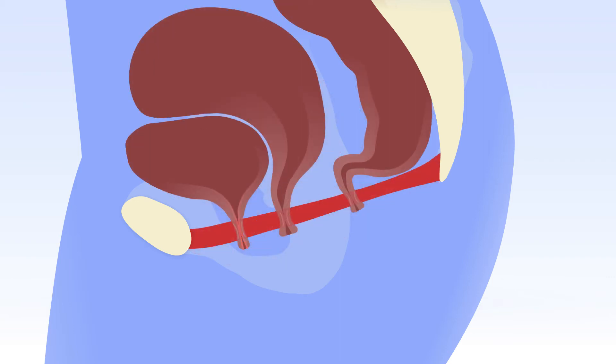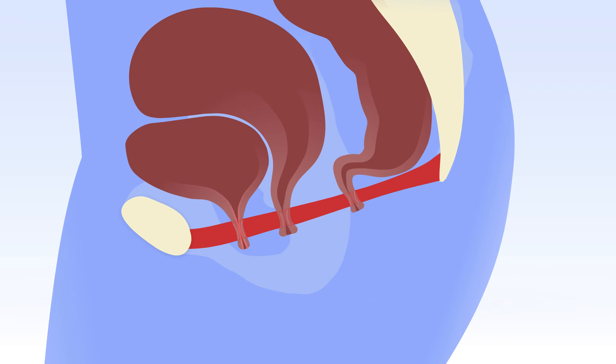If the pelvic floor muscle is hypertonic, its muscle contractile activity and/or passive stiffness are increased. Muscle function such as power, endurance, and relaxation may also be impaired, resulting in voiding problems, obstructive defecation, pelvic pain syndromes, and sexual dysfunctions.